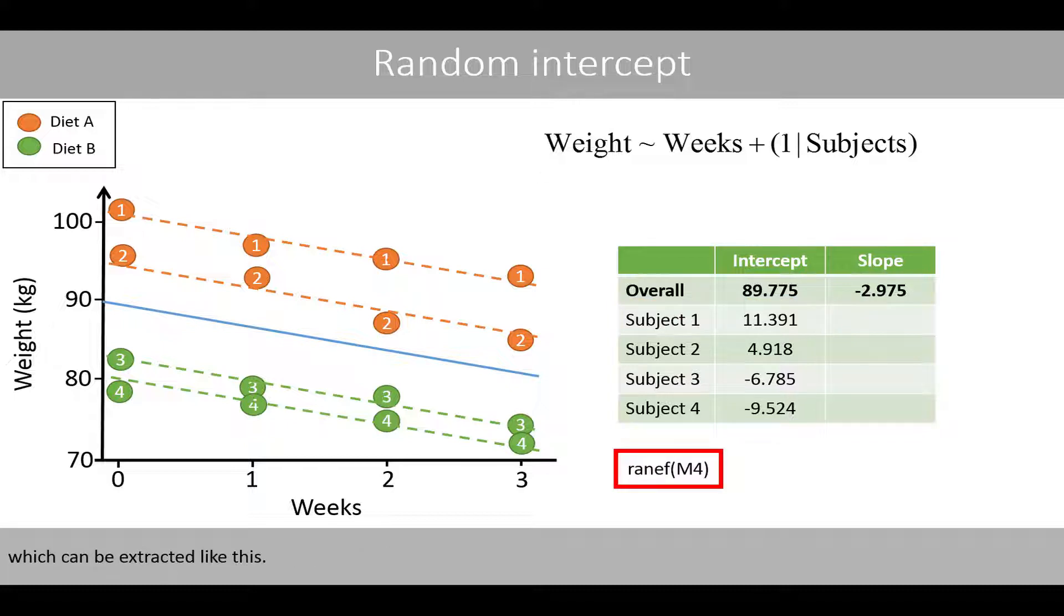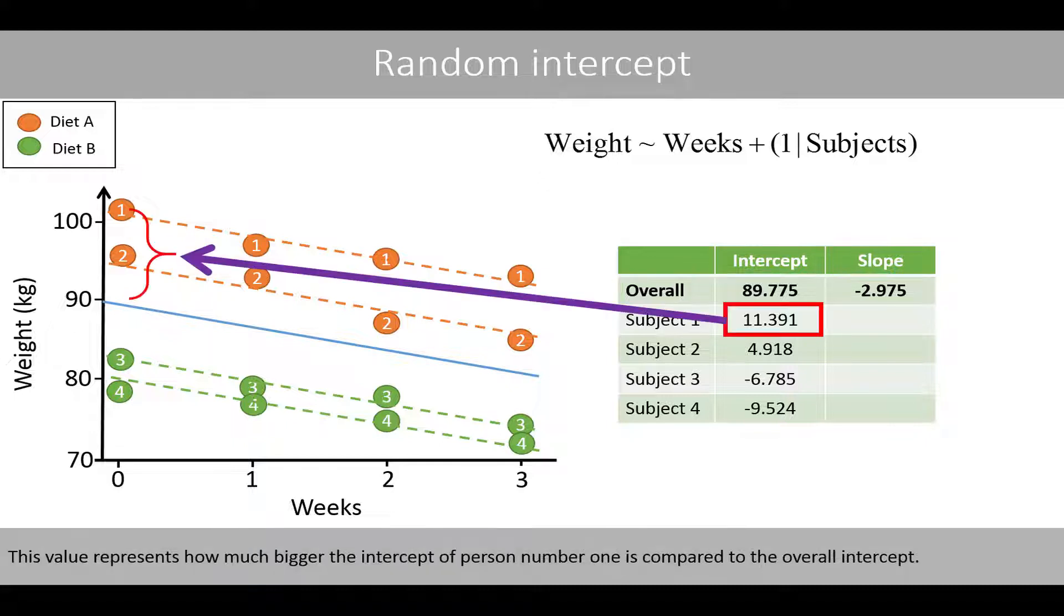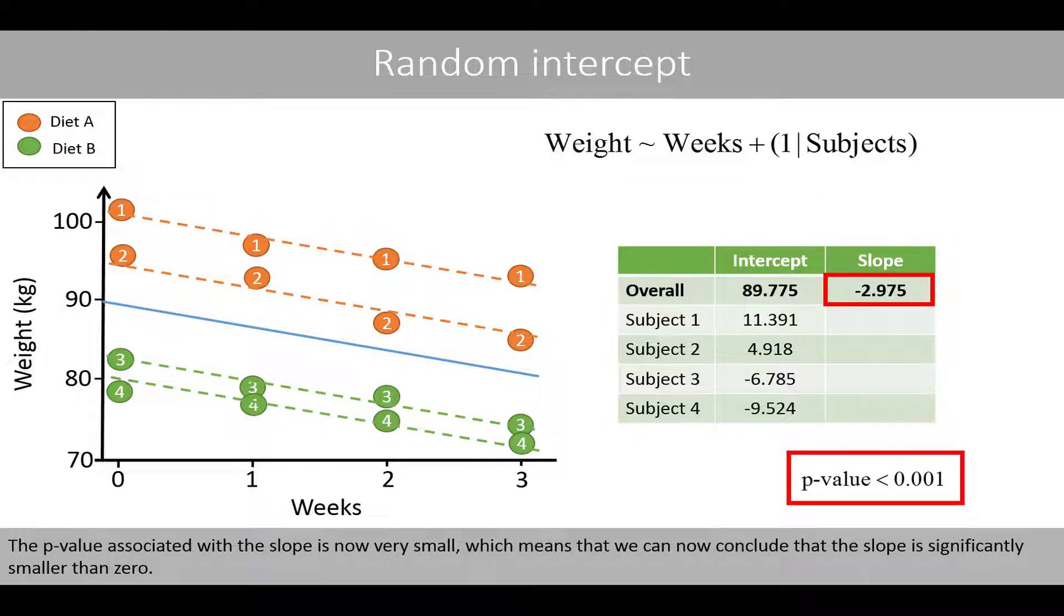Note that these estimates are the same as when we previously used simple linear regression, which can be seen as the overall or average estimates. This value represents how much bigger the intercept of person number 1 is compared to the overall intercept. For example, the intercept of the first person is estimated to about 101. The p-value associated with the slope is now very small, which means that we can now conclude that the slope is significantly smaller than 0.